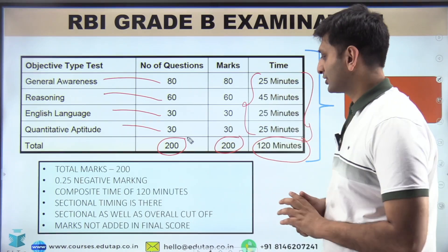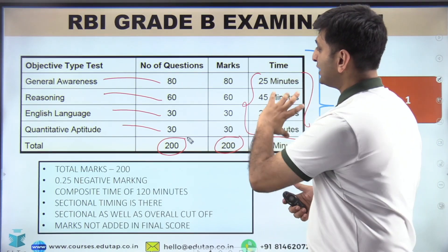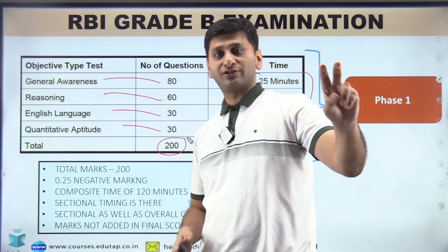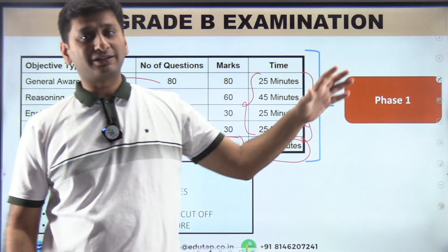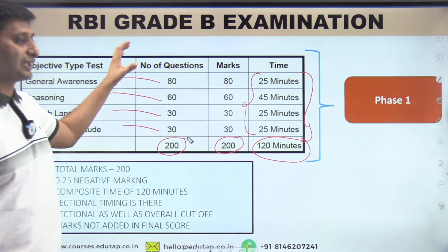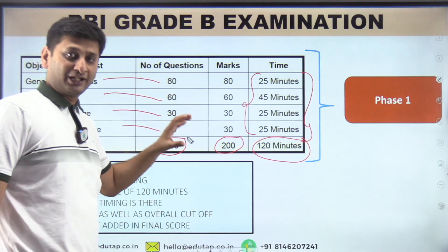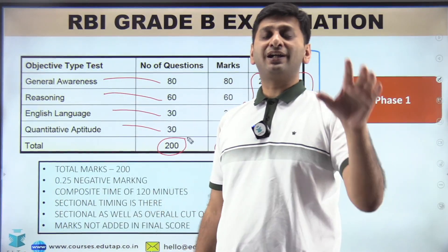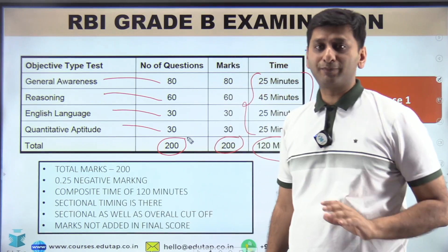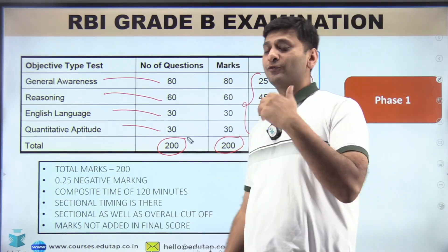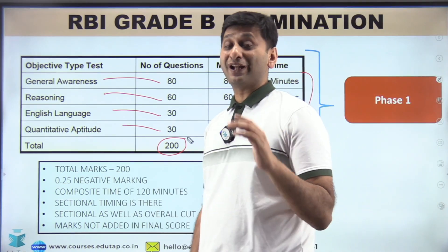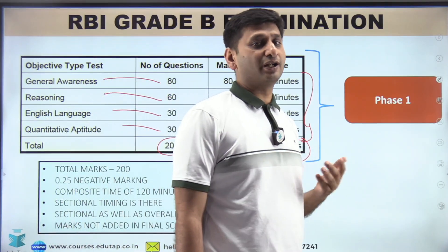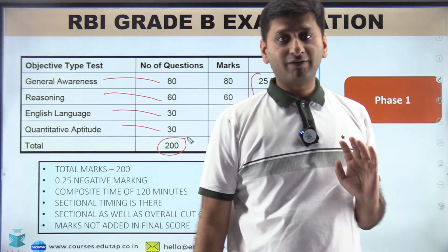To clear phase one, there are two conditions. First, you have to clear the sectional cutoff — each section's cutoff will be defined and will vary each year, decided by RBI depending upon the difficulty level of the paper. Second, there will be an overall cutoff, which will also vary each year.